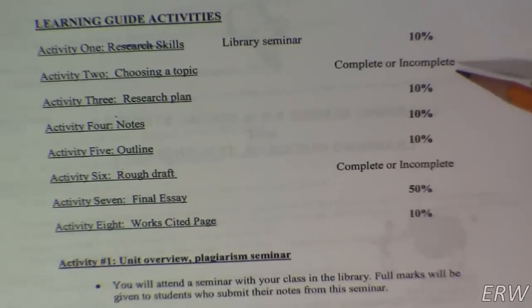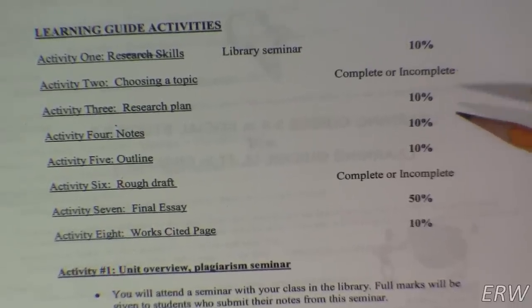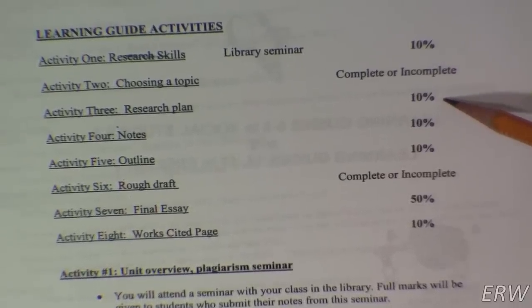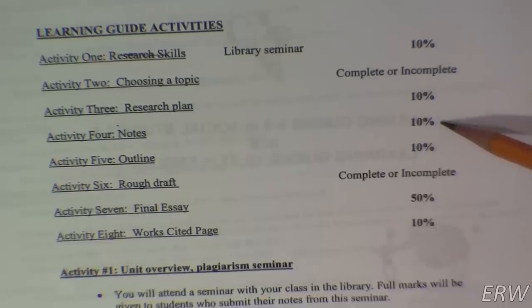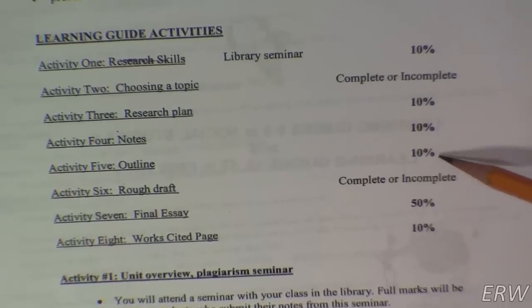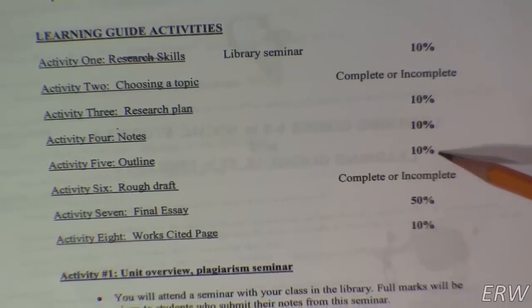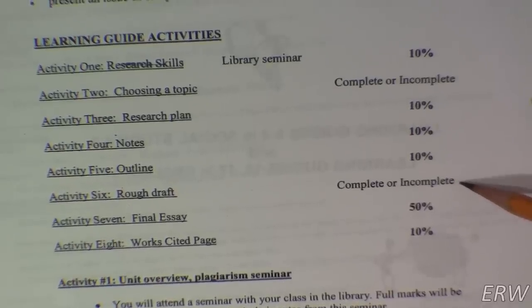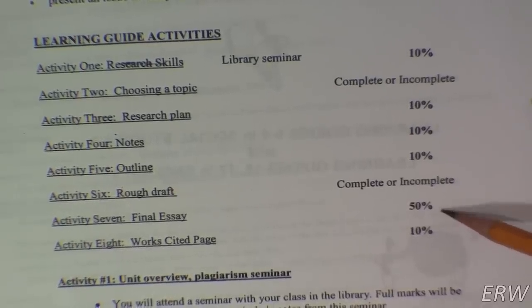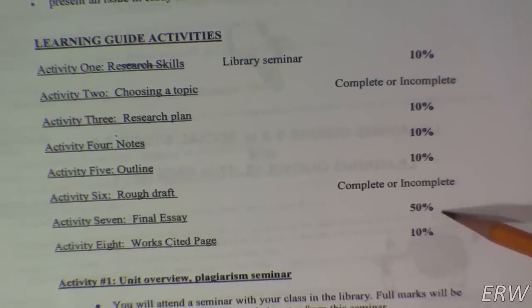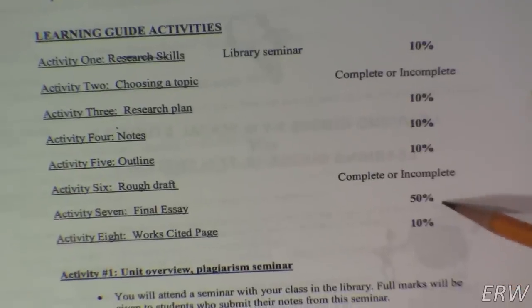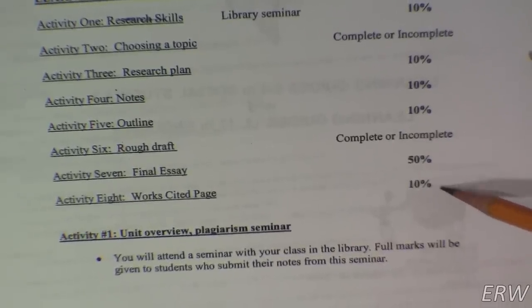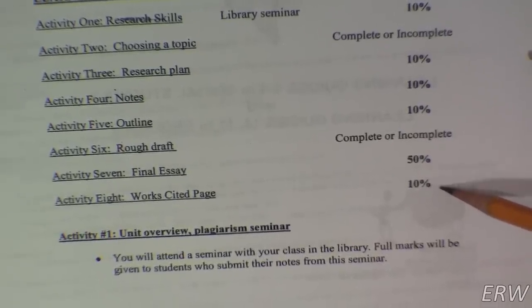The other things you need to complete are: choose a topic, come up with a research plan, do some notes, do an outline, a rough draft with some editing, your final essay, and the works cited page.